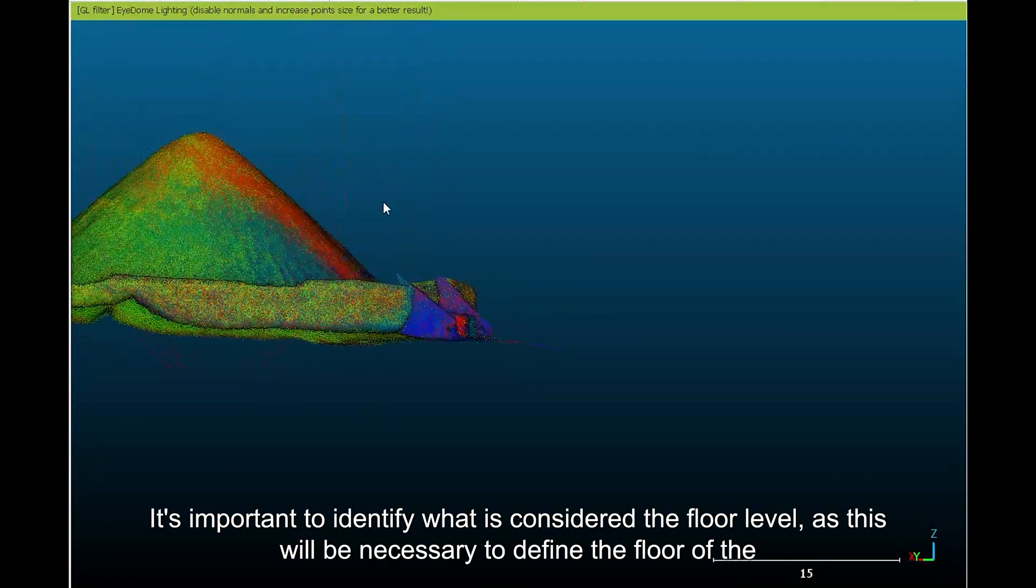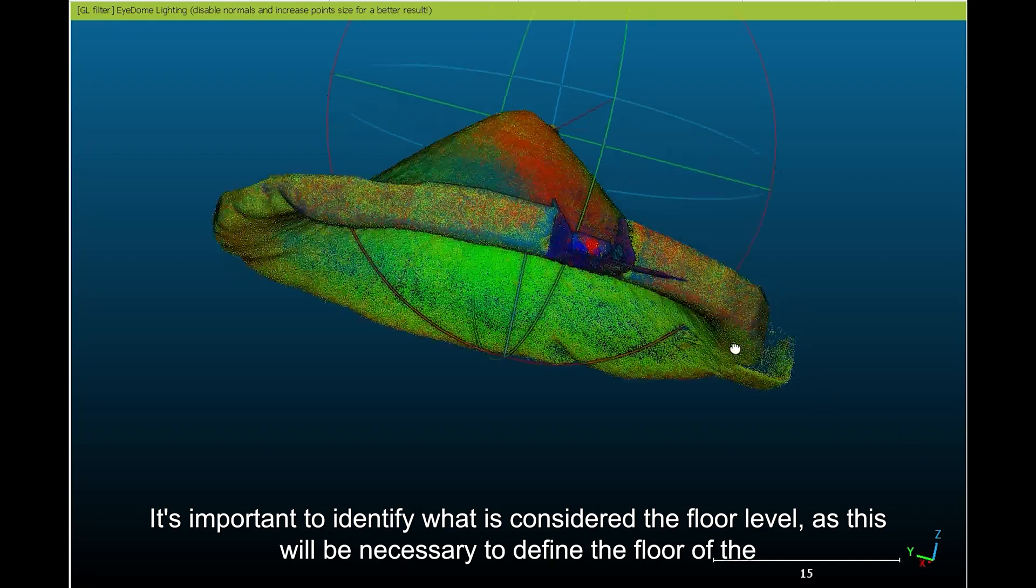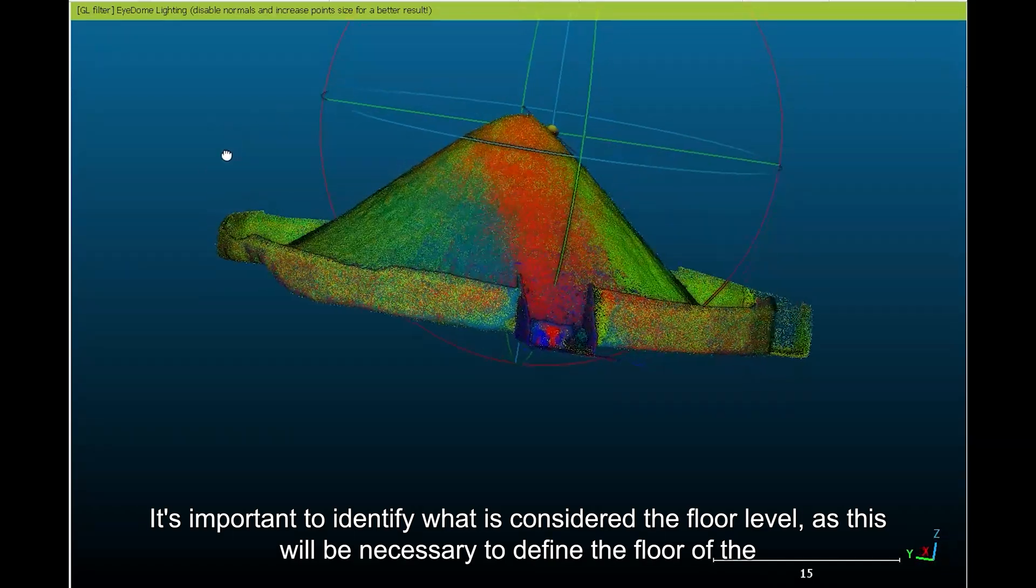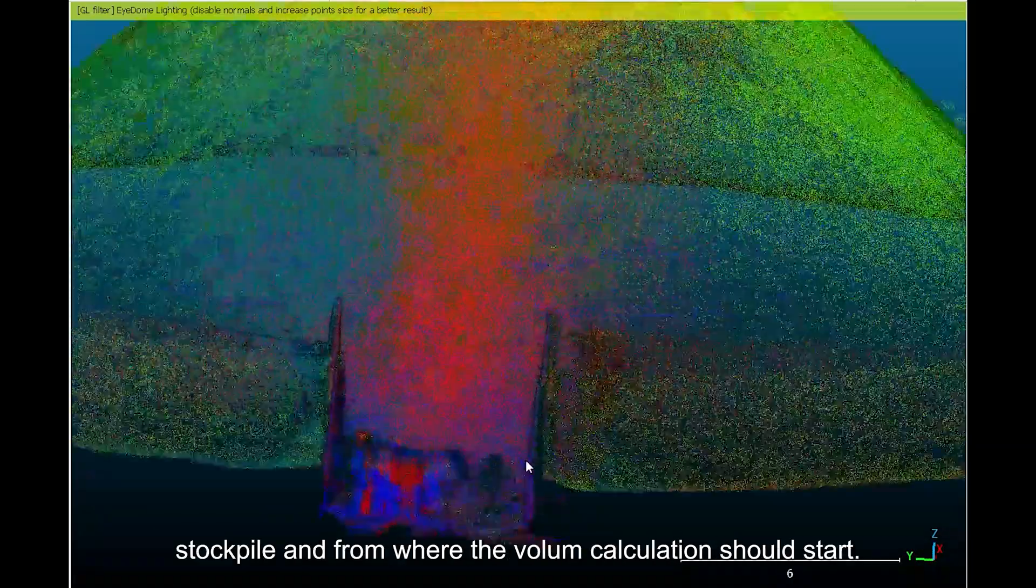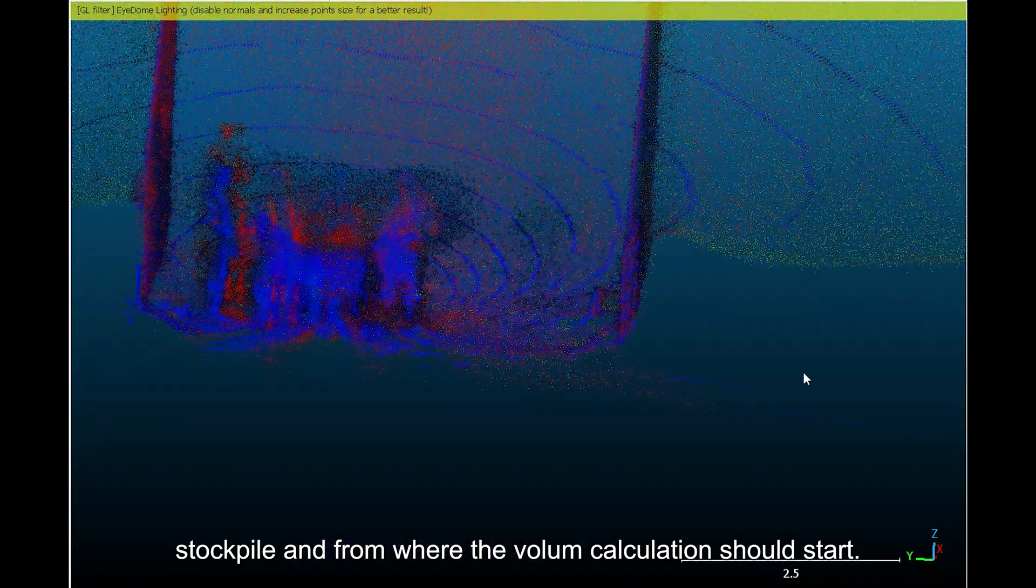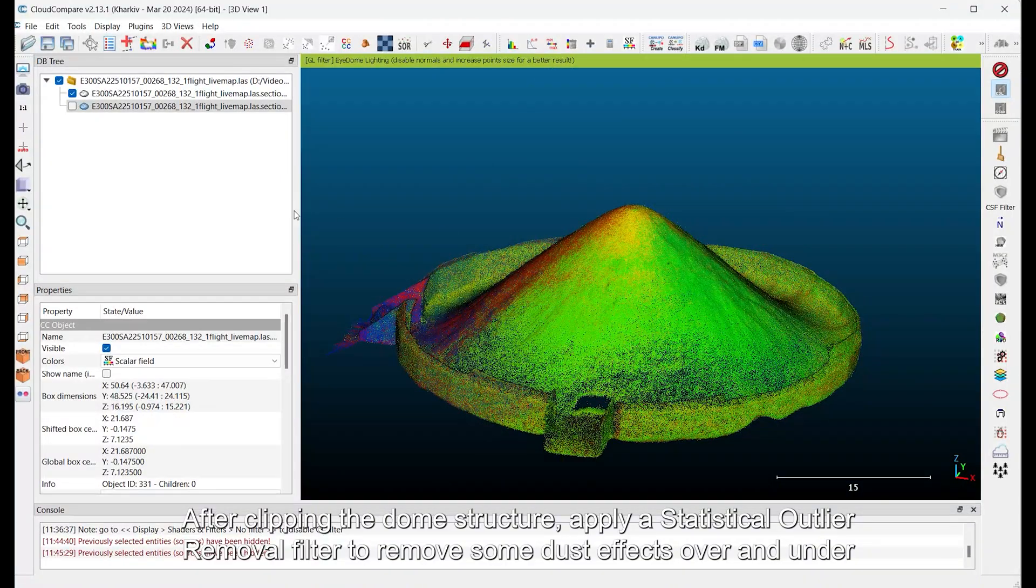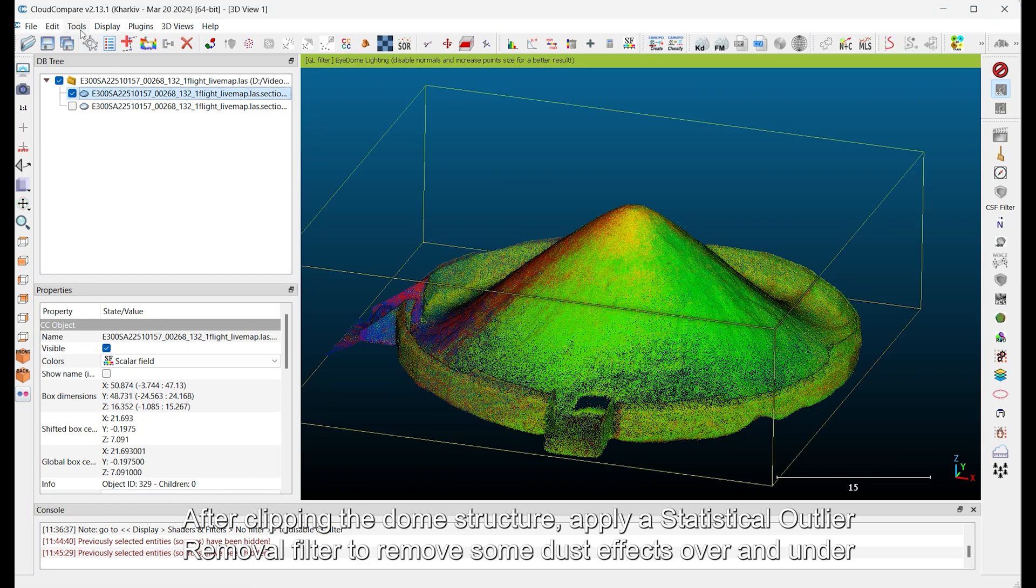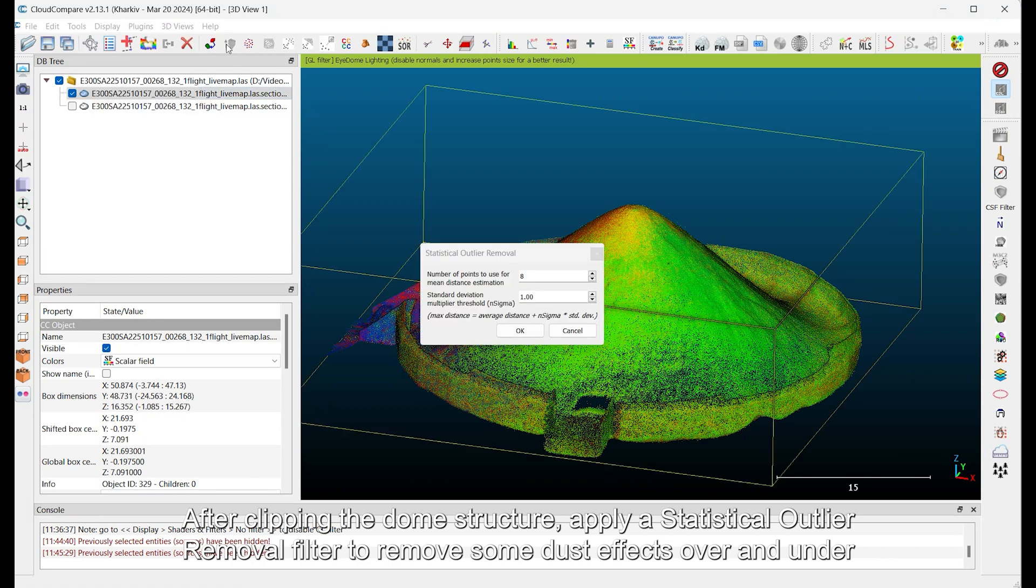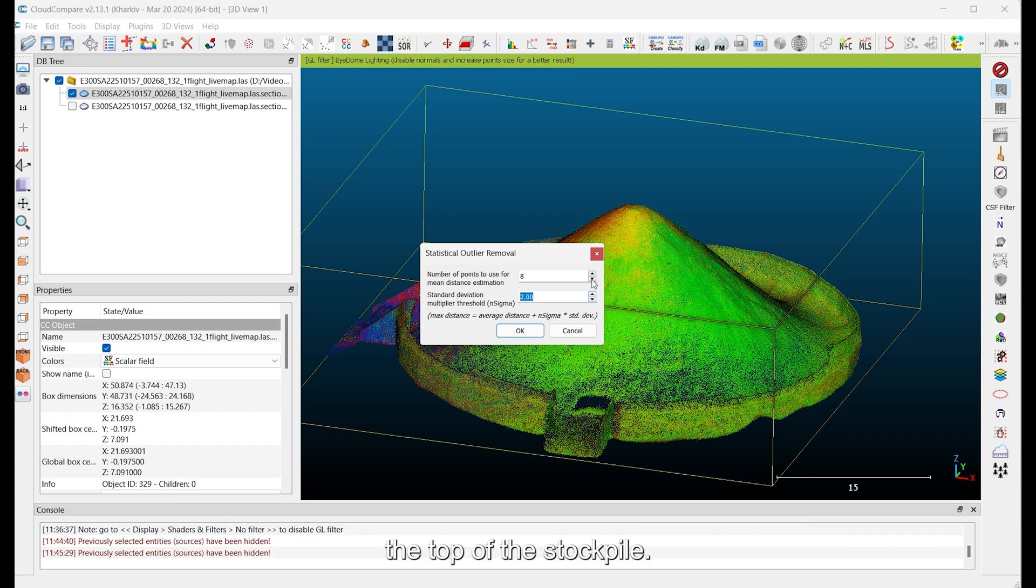It's important to identify what is considered the floor level, as this will be necessary to define the floor of the stockpile, and from where the volume calculation should start. After clipping the dome structure, apply a statistical outlier removal filter to remove some dust effects over and under the top of the stockpile.